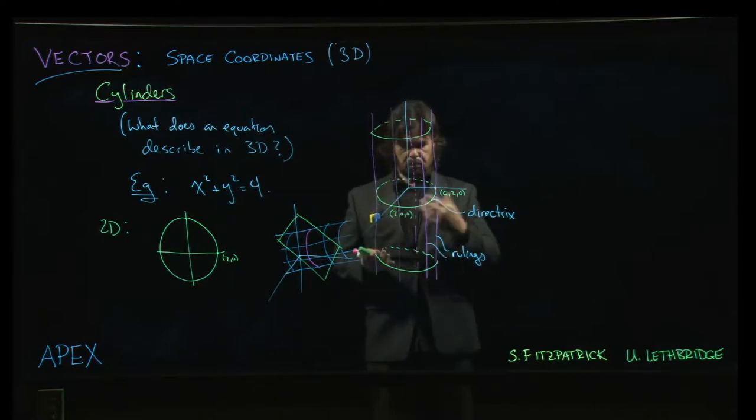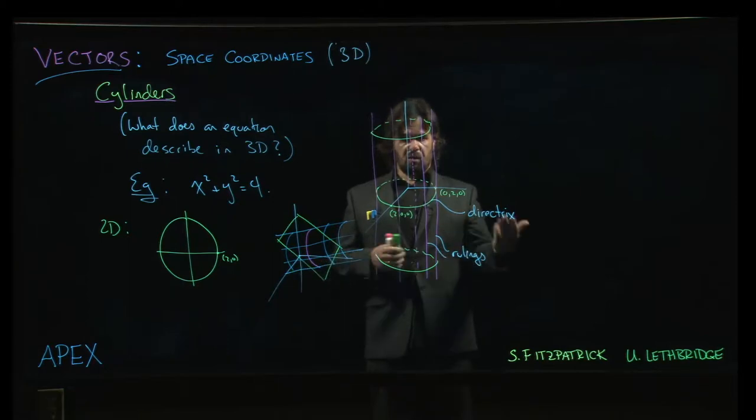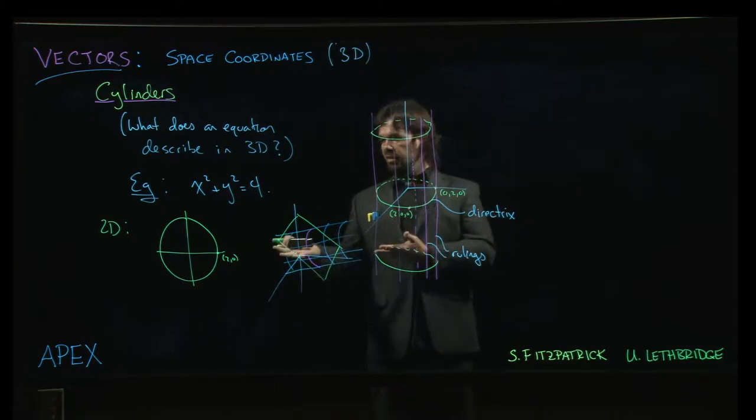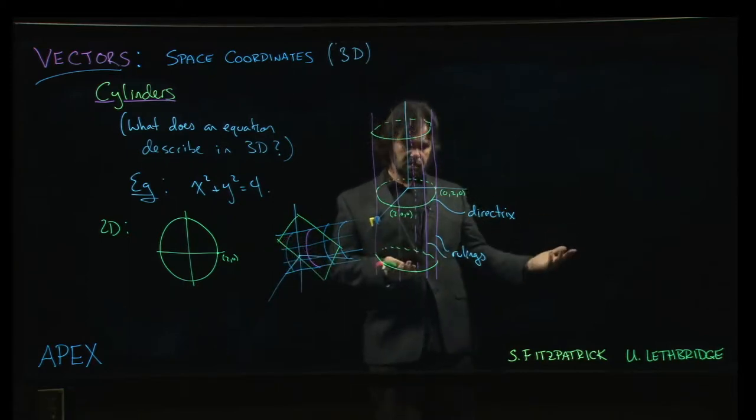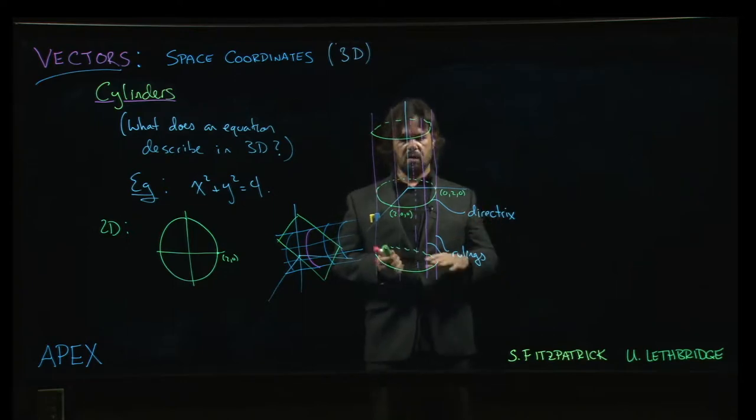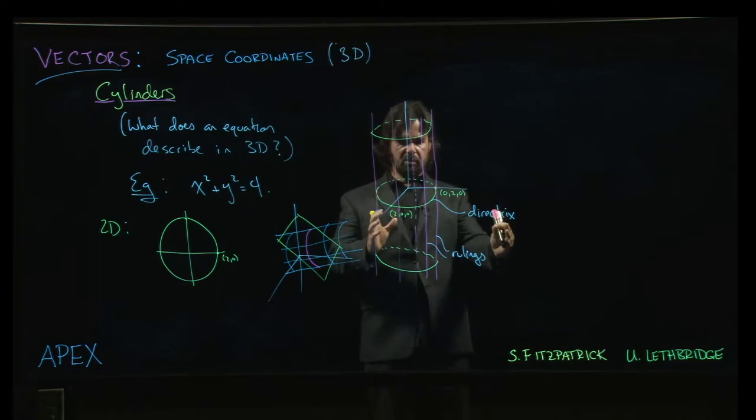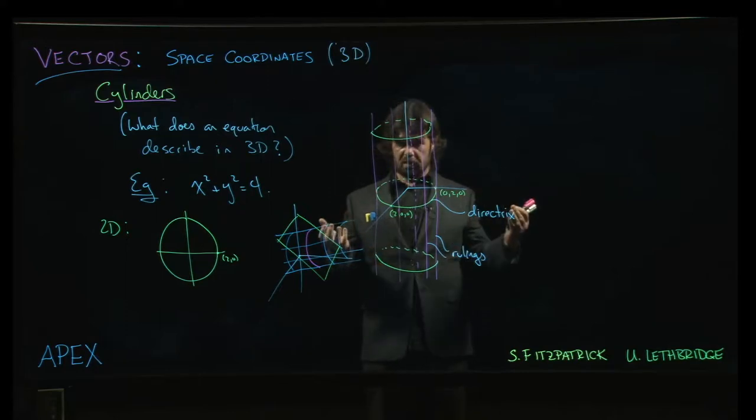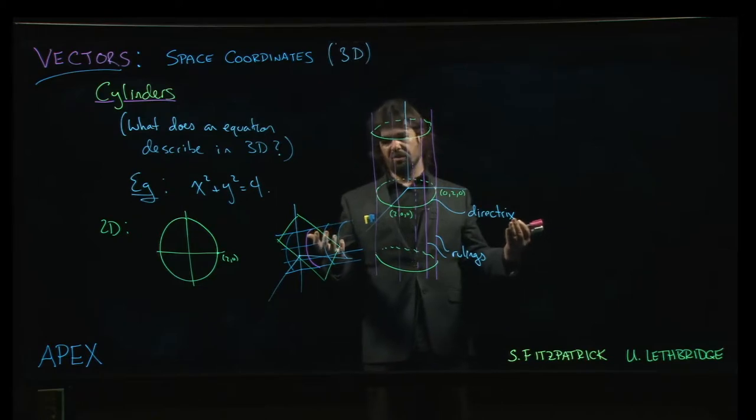Typically, because we want to work with surfaces that we can describe relatively easily in terms of equations and also that we can attempt to sketch, we work with cylinders where the directrix, that curve that generates the cylinder, is going to lie in one of the coordinate planes and the rulings are going to be parallel to one of the coordinate axes, just to keep things simple.